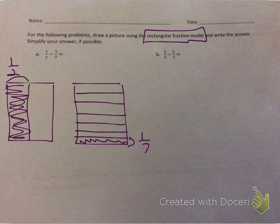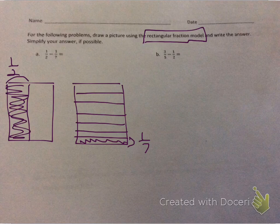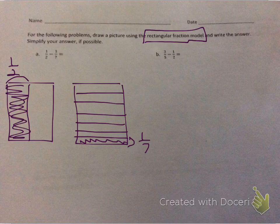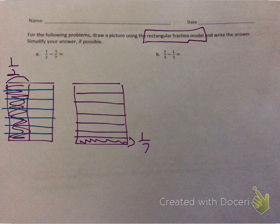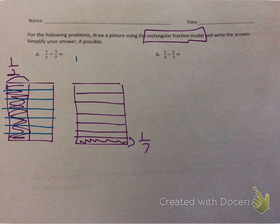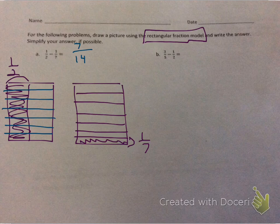Now we take the area models and portion them again. The 1/2 we need to portion into sevenths. I'm going to divide this into 7 equal parts: 1, 2, 3, 4, 5, 6, and 7. So now instead of 2 boxes, we have 14 boxes. And instead of 1 being shaded, there are 7 shaded.